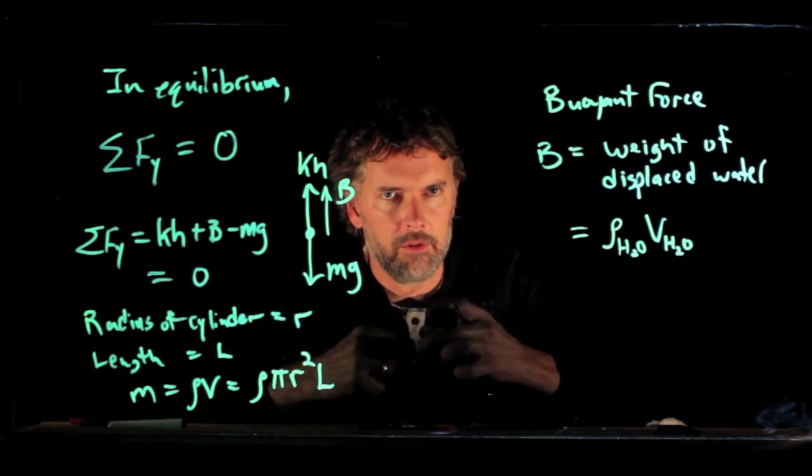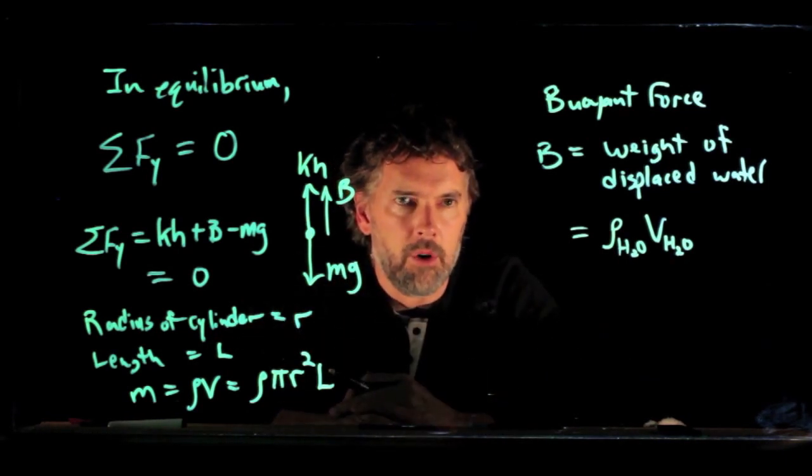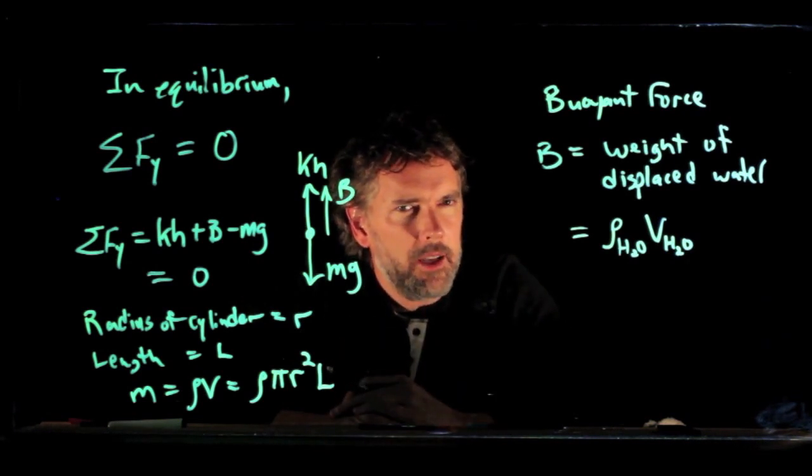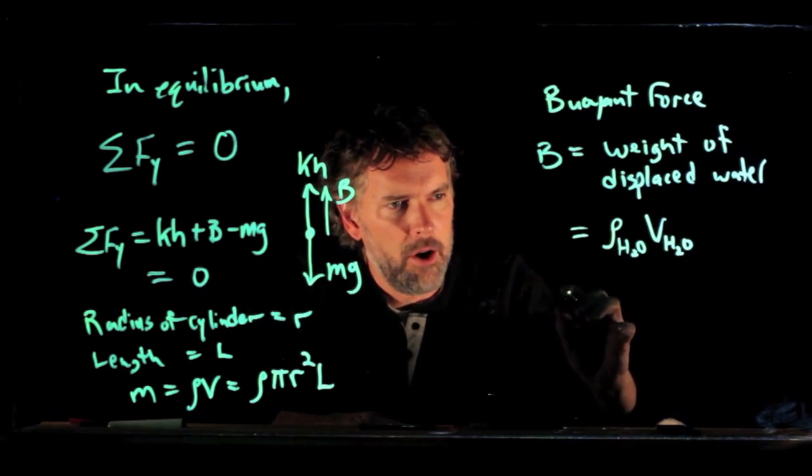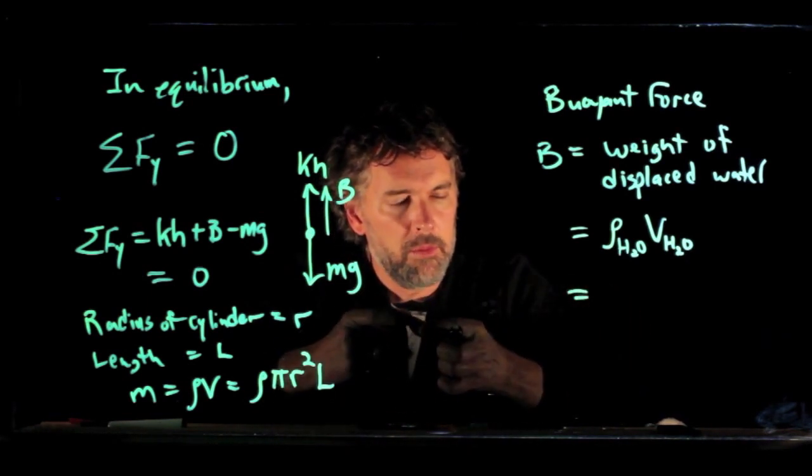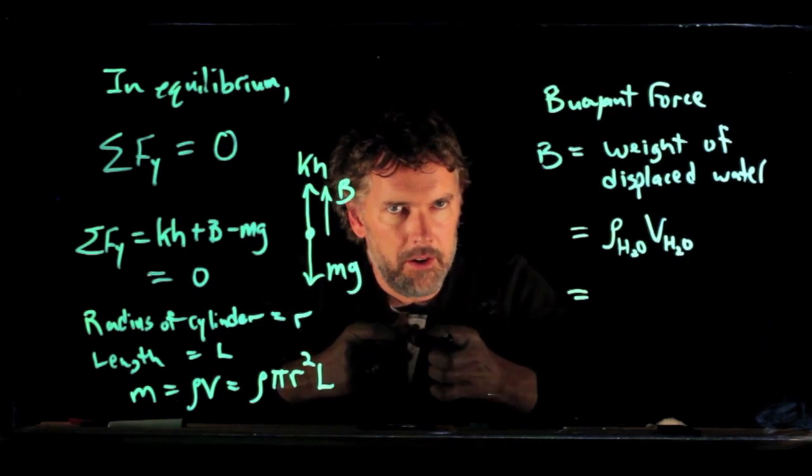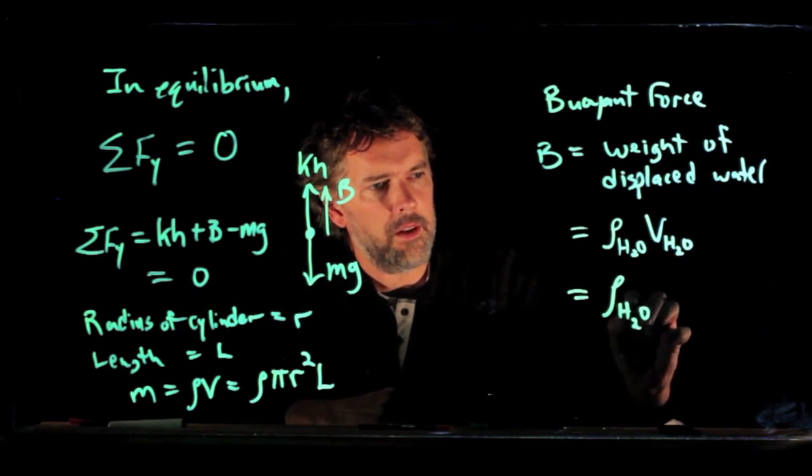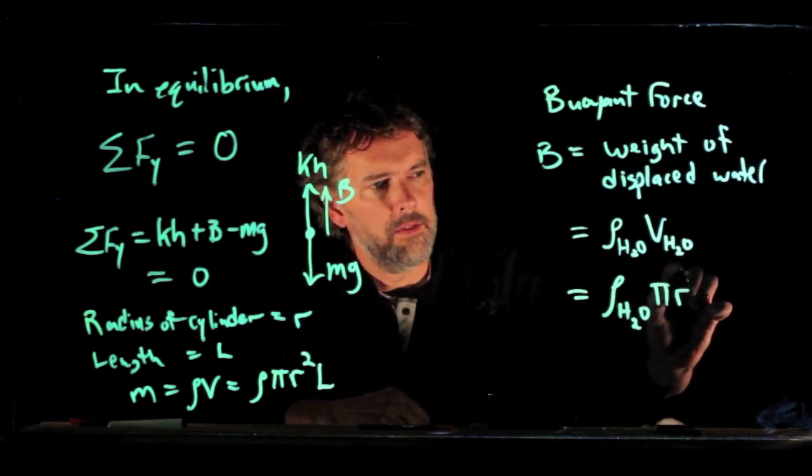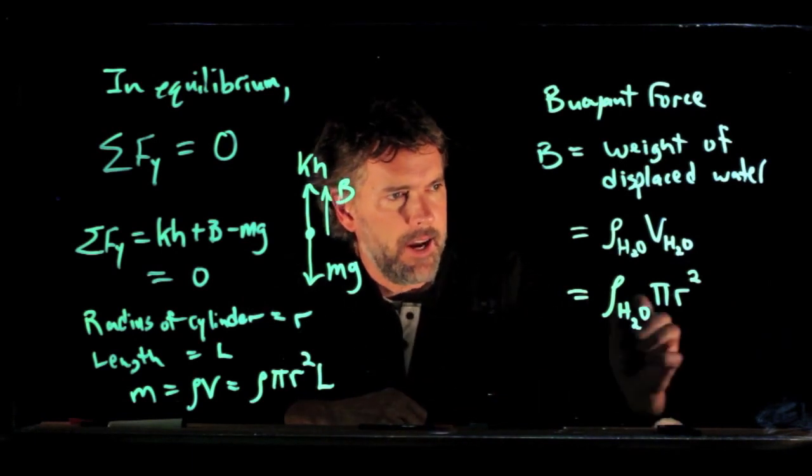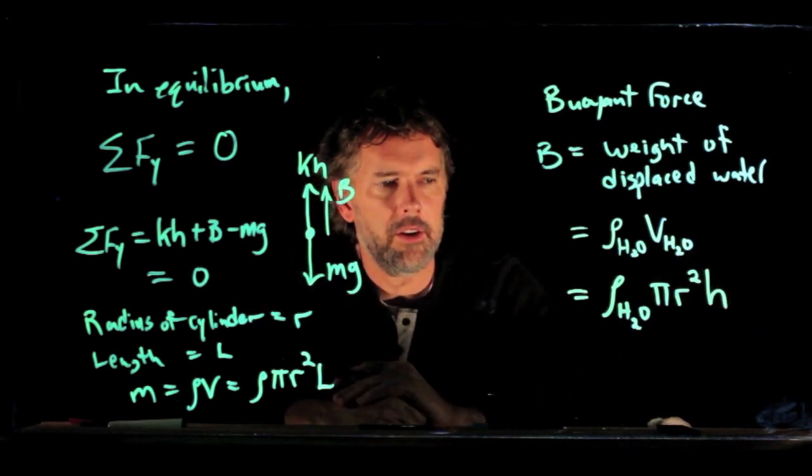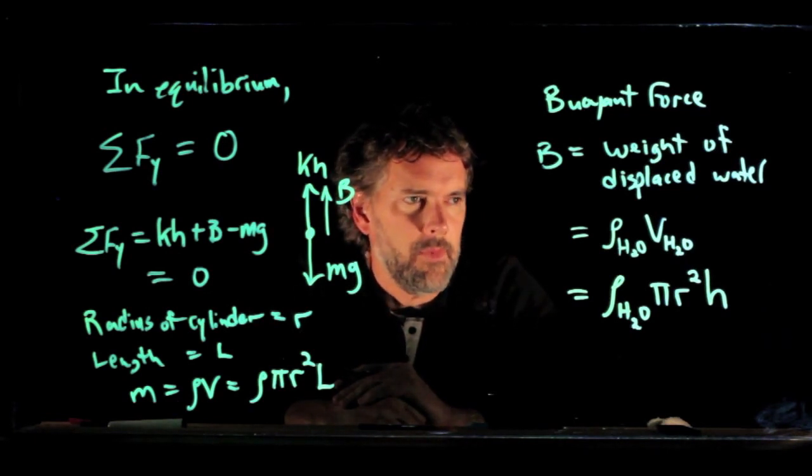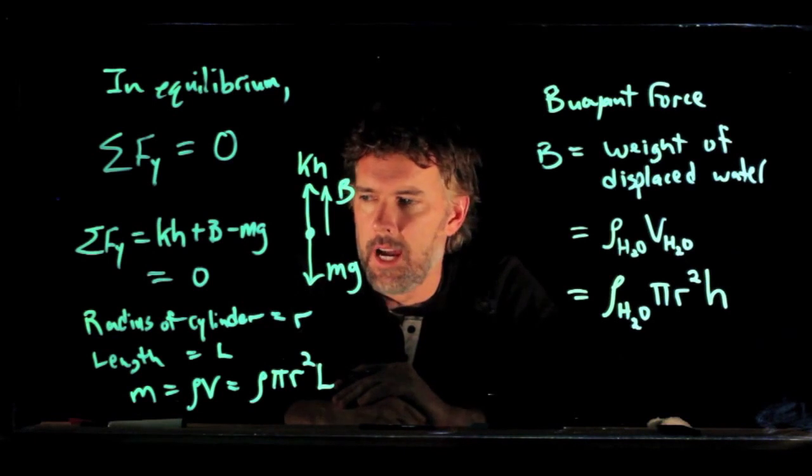Now, as the cylinder goes into the water, it displaces more and more water, and so the buoyant force increases. How do we calculate the volume of the displaced water? Well, it's the volume of the portion of the cylinder that is underneath the water. And that is the radius squared times pi times how much is underneath the water, which we already said was a distance h.